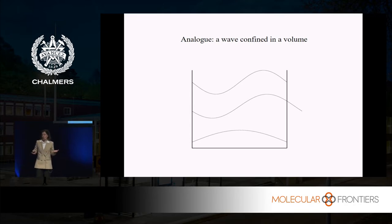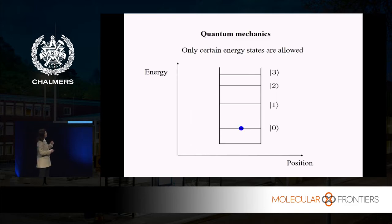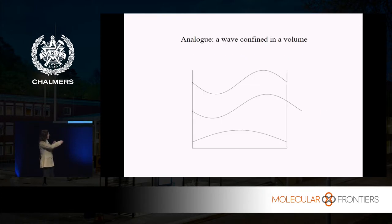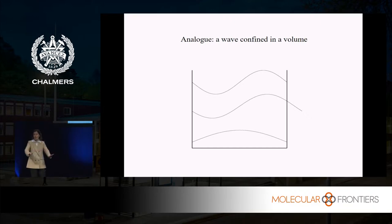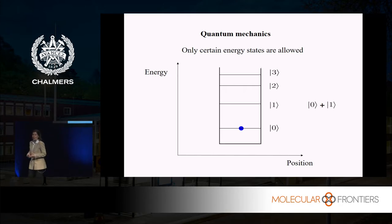In quantum mechanics, particles are kind of waves, and you know that you cannot fit certain wavelengths in a box. There is also another thing that comes from this wave-like feature: these states can be put in a superposition. Waves have a phase — they oscillate up and down. If two waves oscillate out of phase, they kill each other — that's destructive interference. If they oscillate in the same phase, they are amplified. Quantum states can be put in superposition of two energy states, and then these interference phenomena take place.